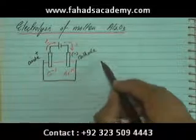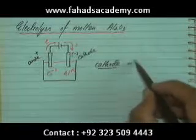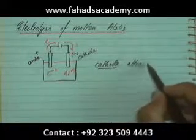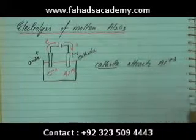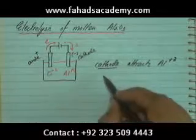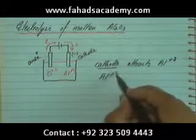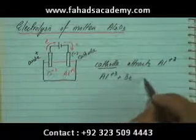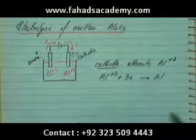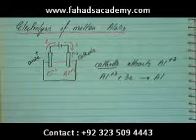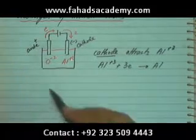At the cathode, the negative terminal attracts Al³⁺. Al³⁺ gains exactly three electrons from the battery and is converted into aluminium metal.